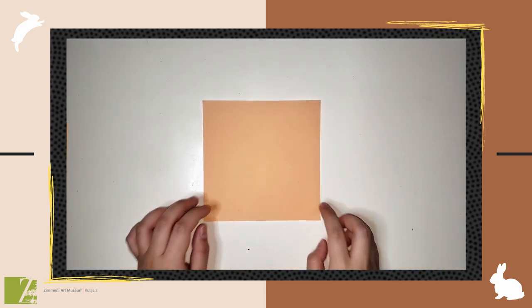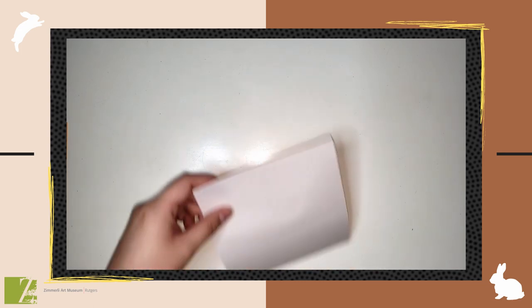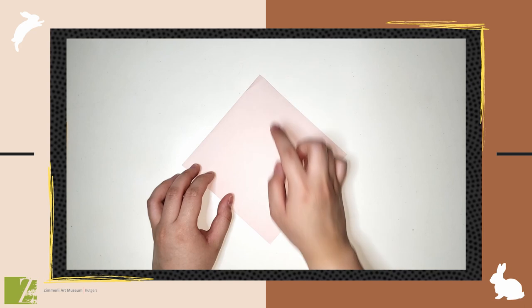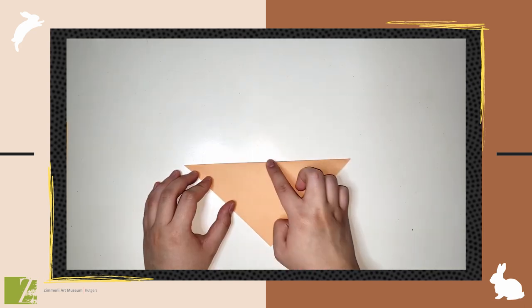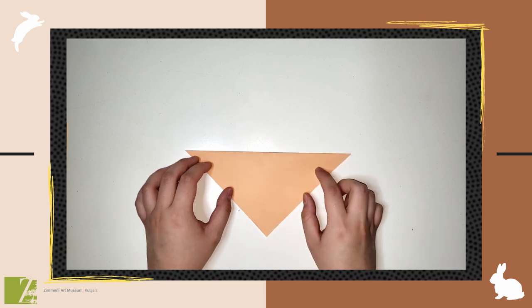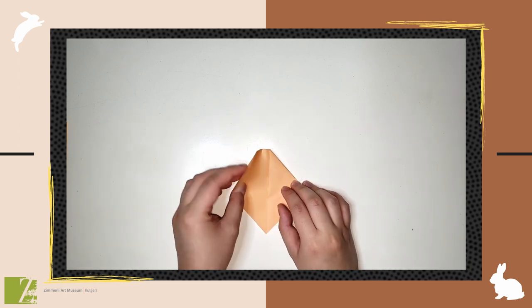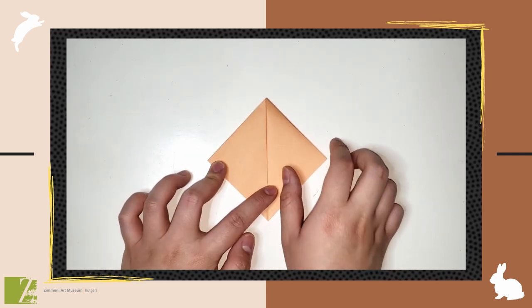Next, we're going to make the traditional rabbit. If your origami paper has one side that's white, start with that side. First, fold the top corner down to the bottom and make a precise crease. Then, fold both the top left and right corners down to the bottom point and crease well. Fold the left and right corners towards the middle, again creasing well.